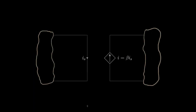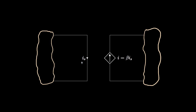Our final example of a controlled source is a current-controlled current source. Here, the current supplied by the source is proportional to some controlling current, and the proportionality constant used in this example is beta.